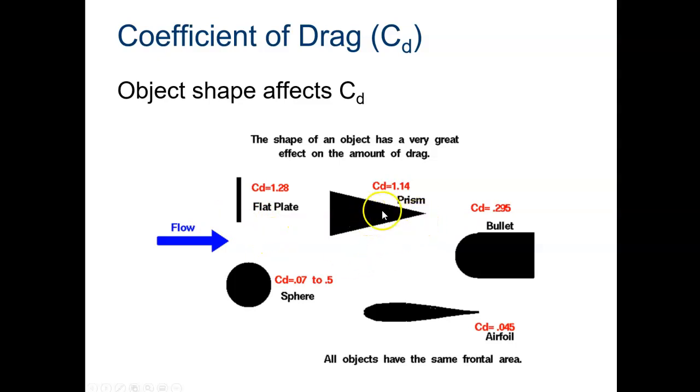If we look at a bullet, the flat part is back here, and you can see it is even less than the prism because what presents itself to the flow is a curved surface. Just like the wing presents a curved surface to the flow, so does a bullet. But it has a lot more drag because it has this flat part at the back. If you take a bullet and make it round, make it a sphere, that's going to go down even more from 0.295 to some range between 0.07 and 0.5.